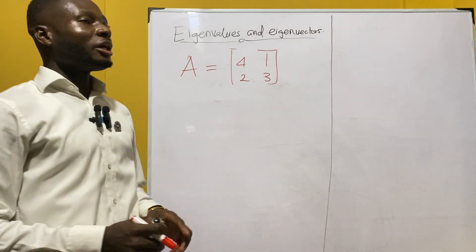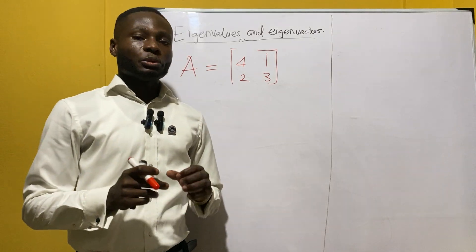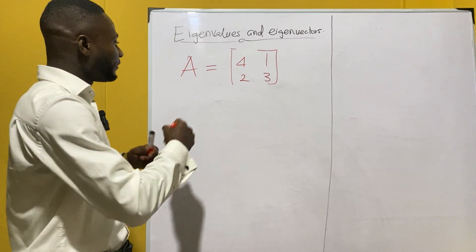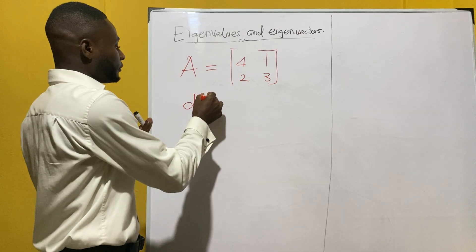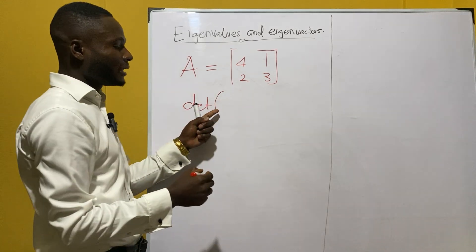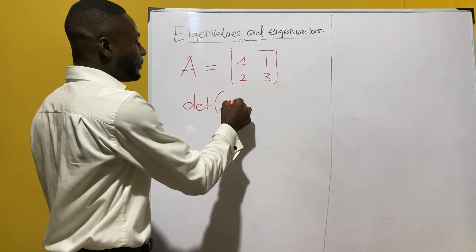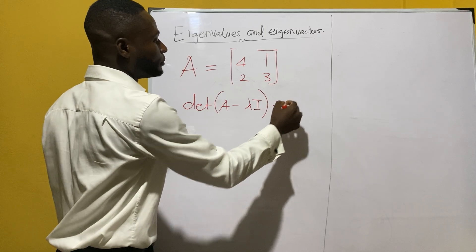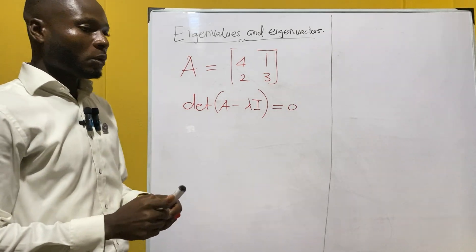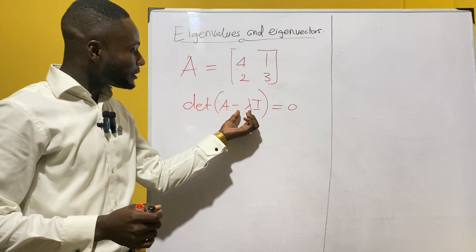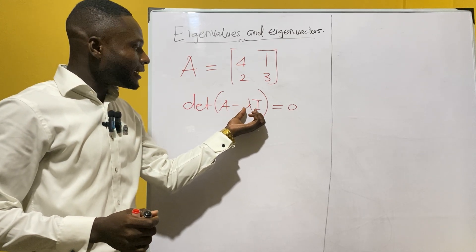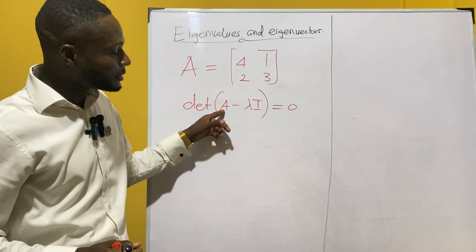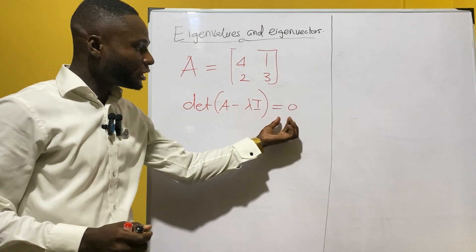What we have to note is that we have a characteristic equation that we have to use. The characteristic equation is given by the determinant of the matrix minus lambda times the identity matrix, and that should be equal to zero. What we mean is that when you subtract lambda times the identity matrix from the matrix A, the determinant of the result should give you zero.